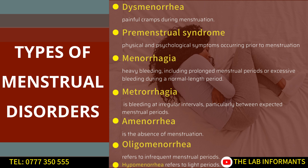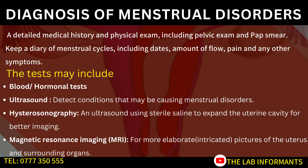Another type of menstrual disorder is oligomenorrhea, which refers to infrequent menstrual periods — where periods may come one month and not the next, or may come after a shorter or longer interval than expected. Some women also experience periods that are lighter than normal, and this is referred to as hypomenorrhea.